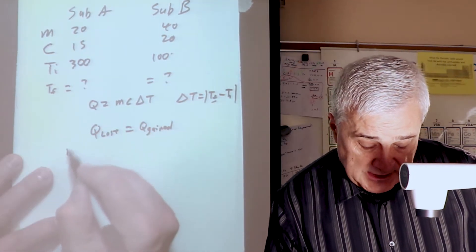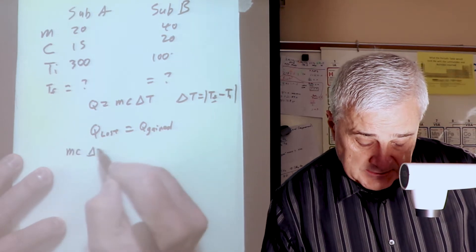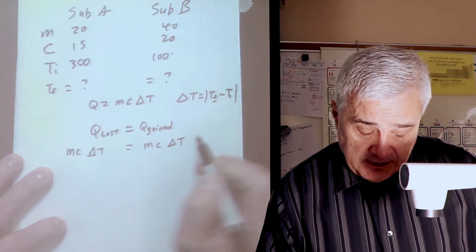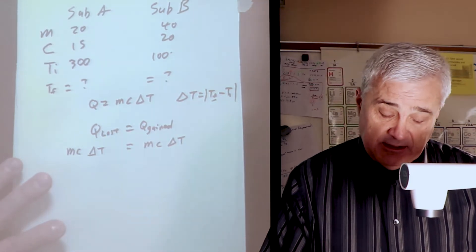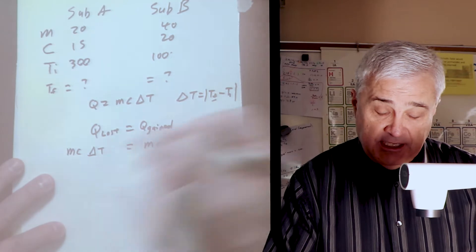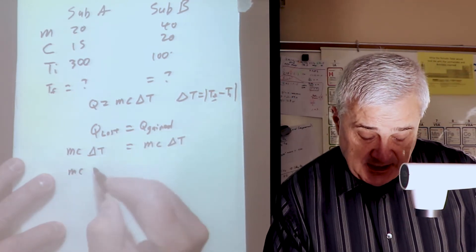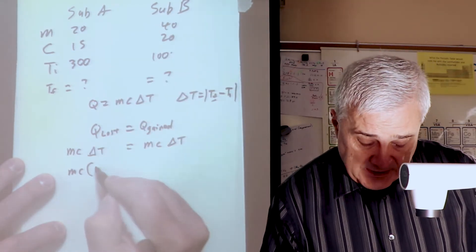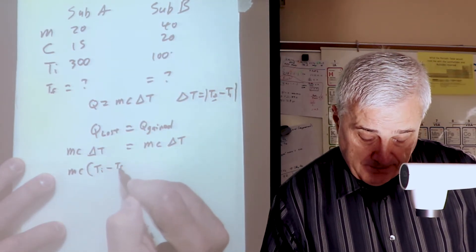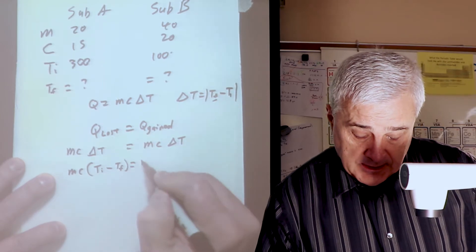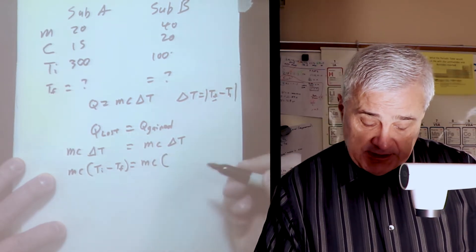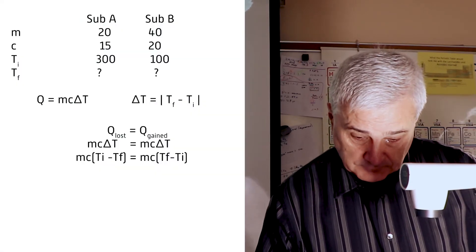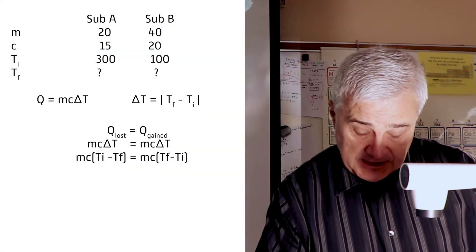If heat is MC delta T, then the MC delta T for the lost side is equal to MC delta T for the gained side. I'm going to write MC open parentheses the initial temperature minus the final, equals MC open parentheses the final temperature, which is what we're looking for, minus the initial.